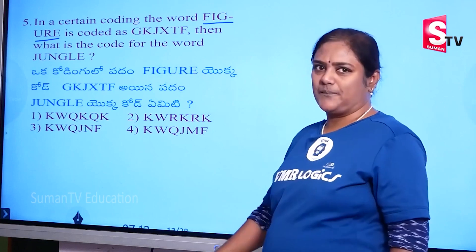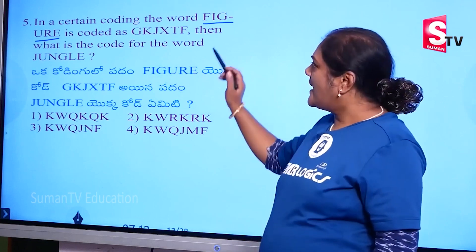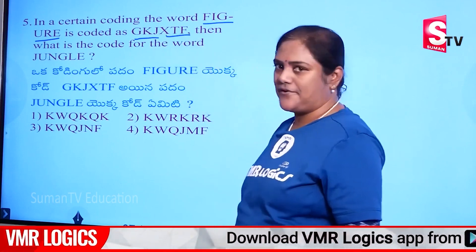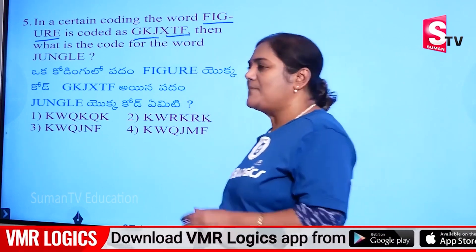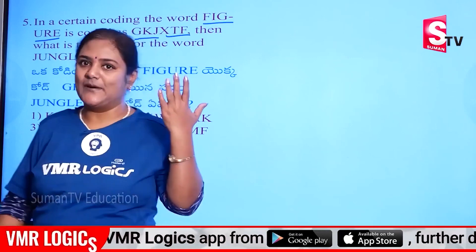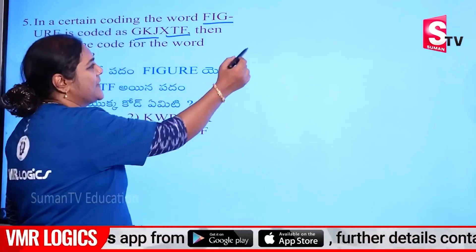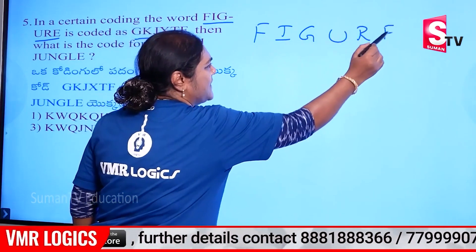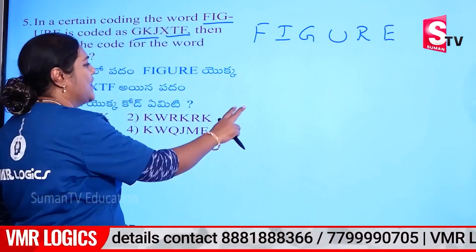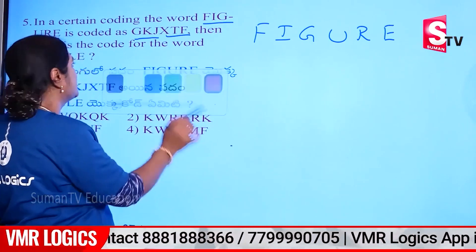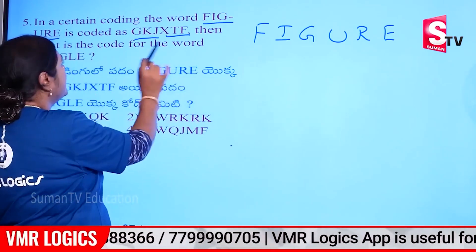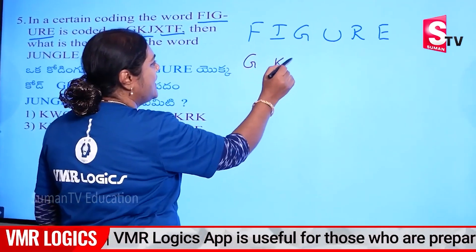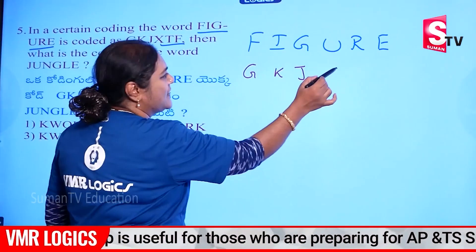Now, next model: FIGURE. That is the code GKJXTF. I will tell you this question — this code is all about the answer. FIGURE is coded as GKJXTF.